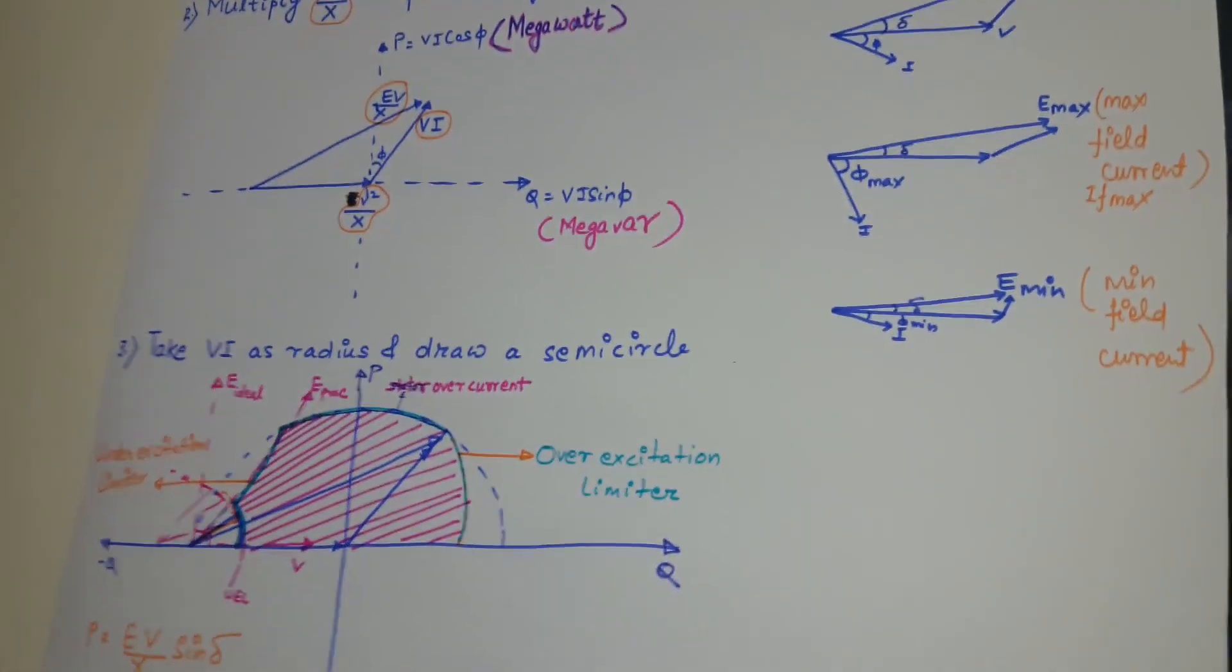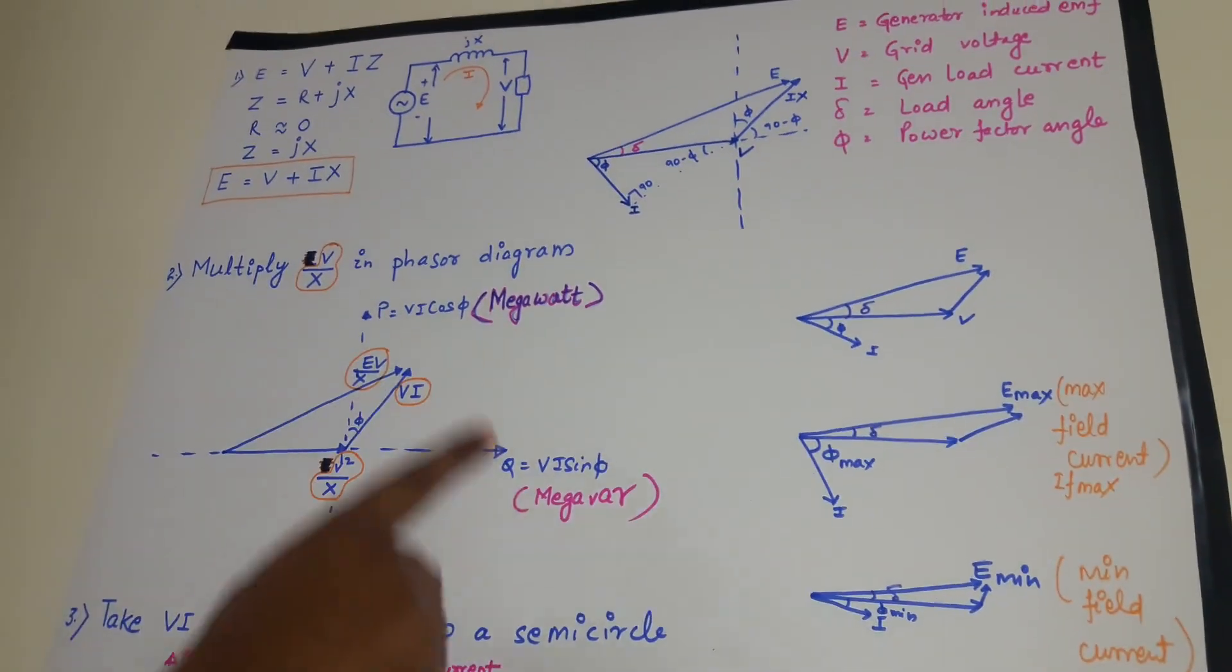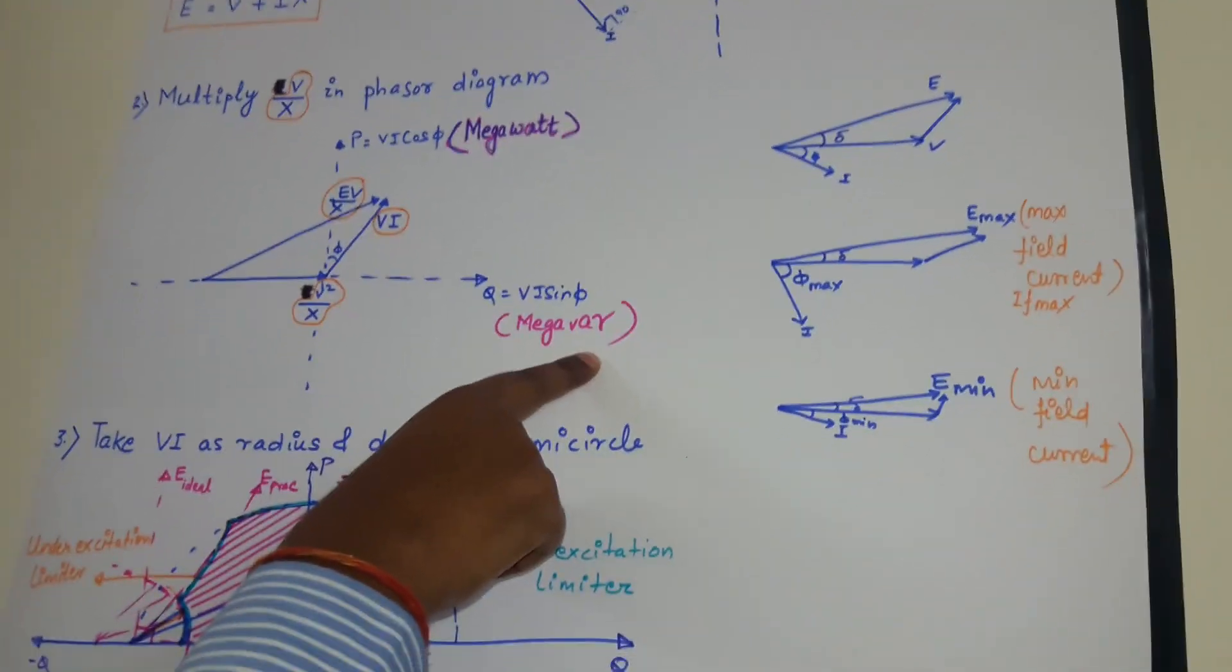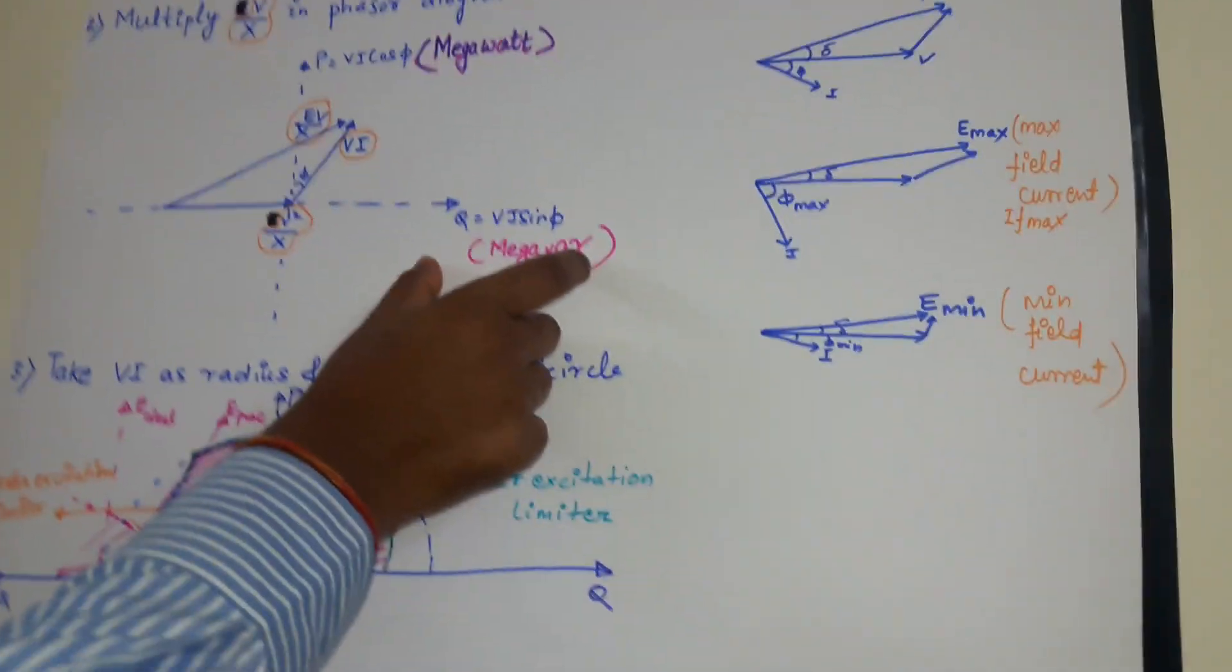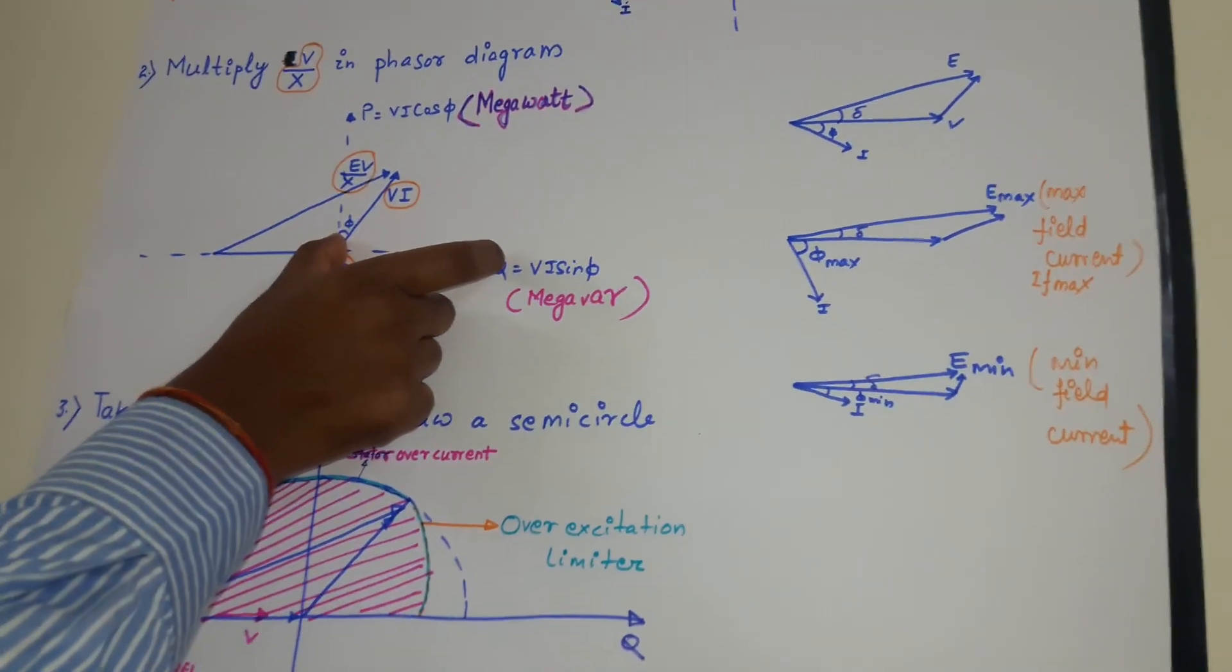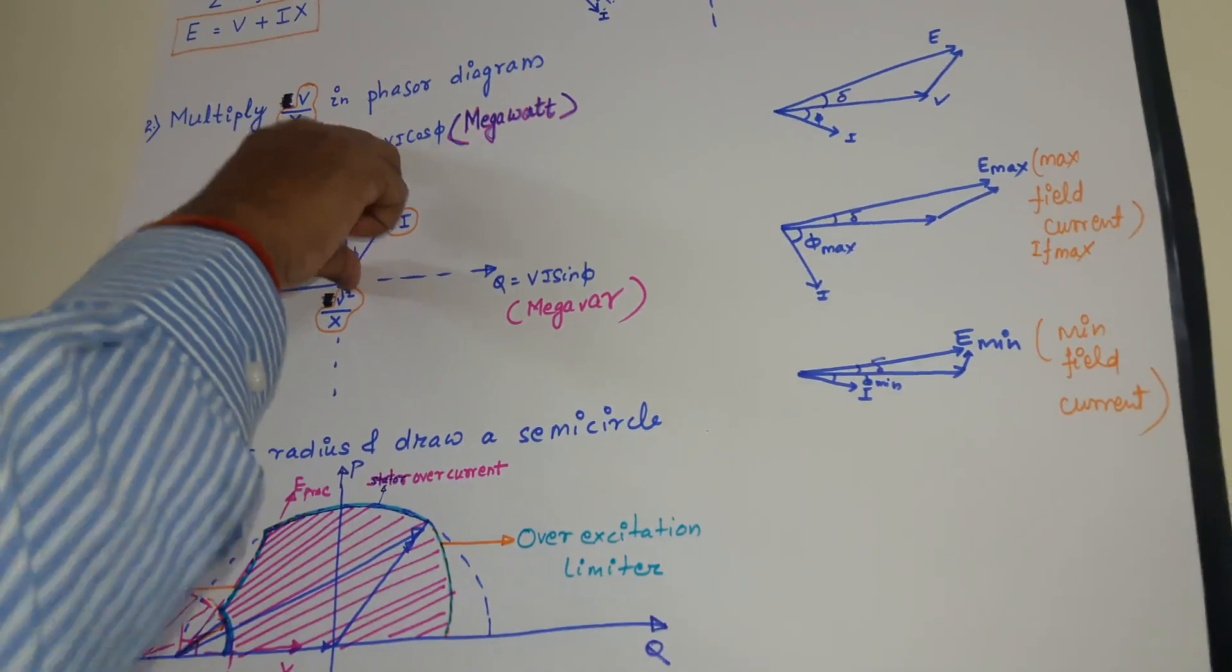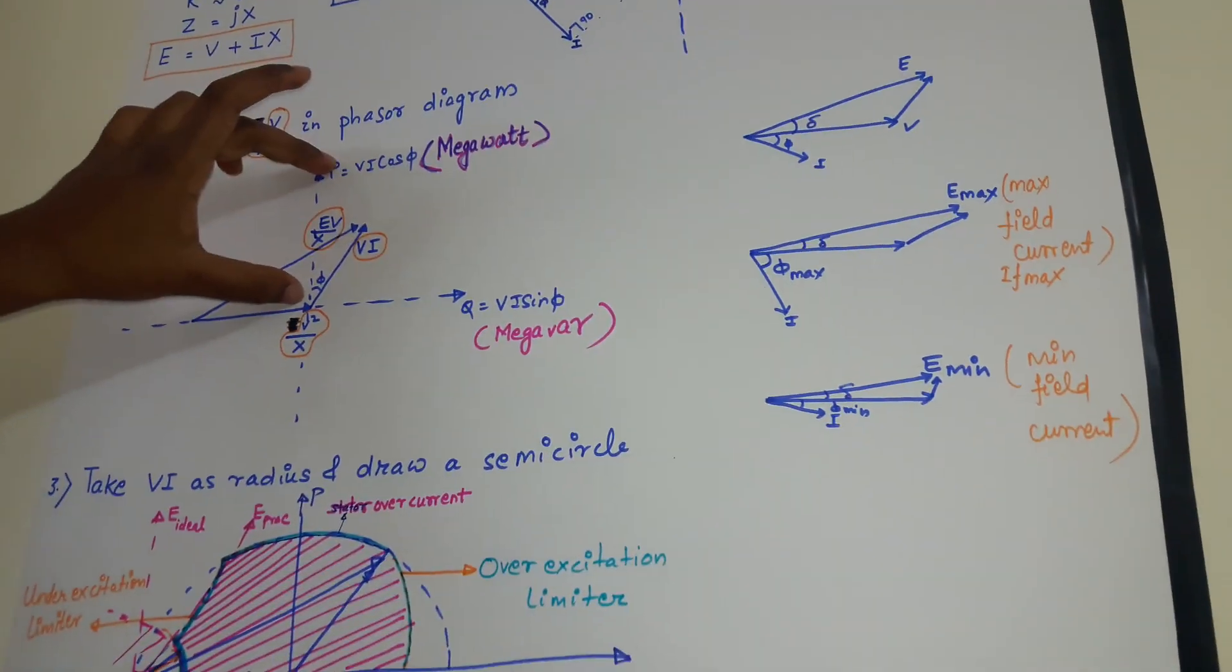So generator always generates megawatt. But it can absorb MVAR or it can generate MVAR. So the MVAR can be in positive X axis or in negative X axis. But the megawatt will be always in positive Y axis.